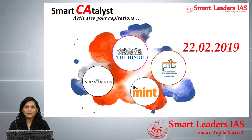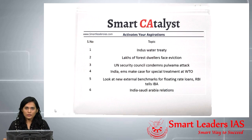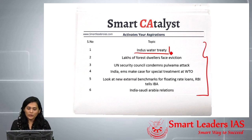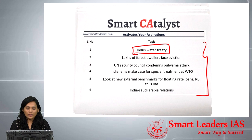Hello friends, welcome to Smart Catalyst. Today we'll be seeing the current affairs of 22nd February 2019. The articles that will be seen for prelims are six. The first article is about the Indus Water Treaty between India and Pakistan.